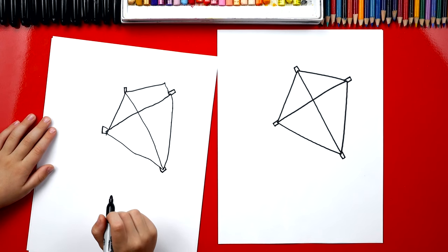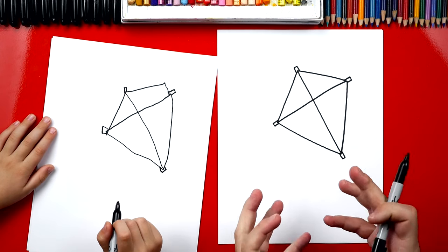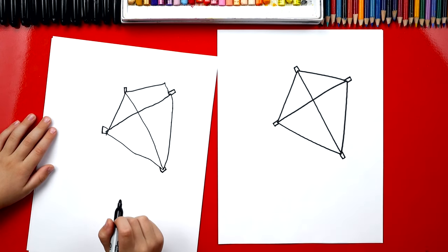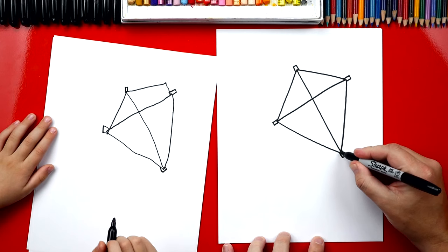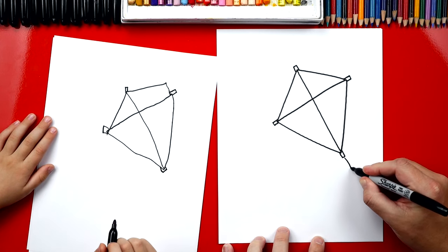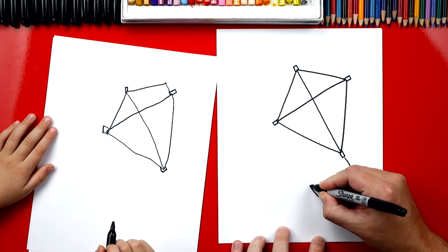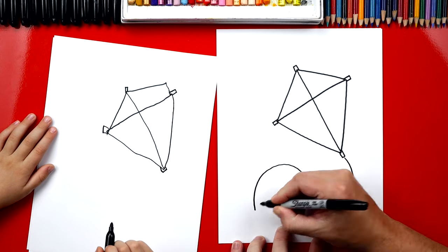Okay, now the next thing we need to add to our kite is the tail. The tail is what keeps the kite straight or flying up in the air instead of crashing down onto the ground. We're going to draw an S line. Watch this. Start right here and draw an S line. Comes down, up, and then back down.